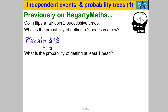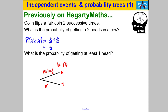Two things happen: you flip a coin the first time and you flip a coin the second time. So let's consider the first flip first. On the first flip there are two possible outcomes — you can either get yourself a head or a tail, and we label it like that. The probability of a head is a half, and the probability of a tail is also a half.